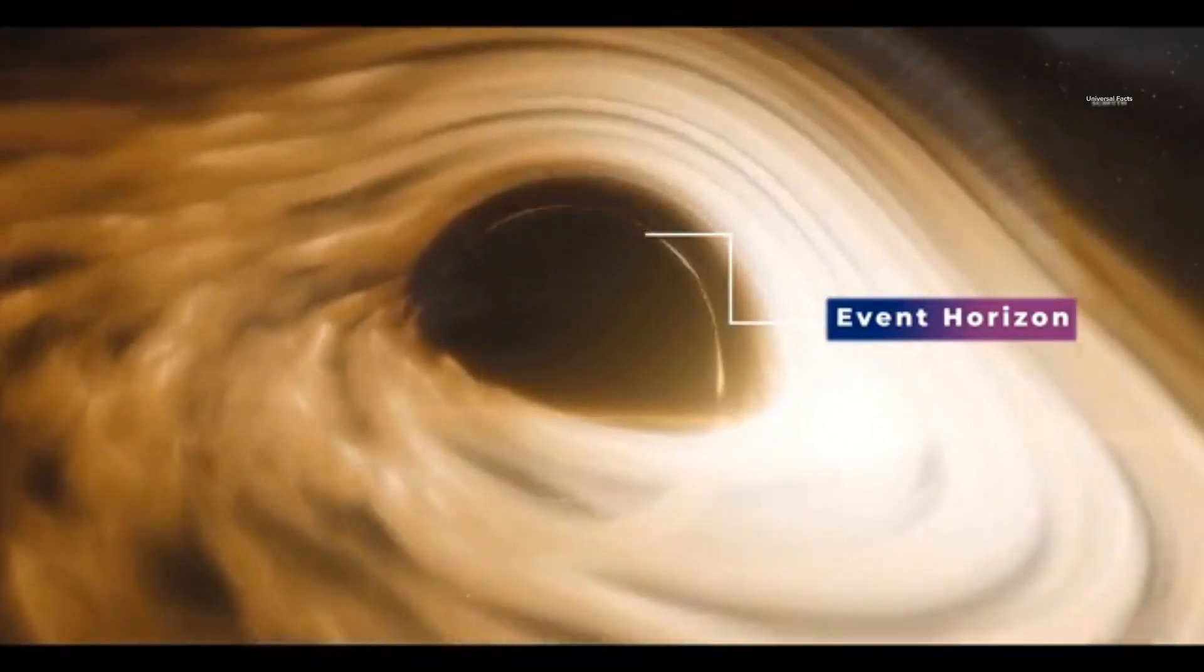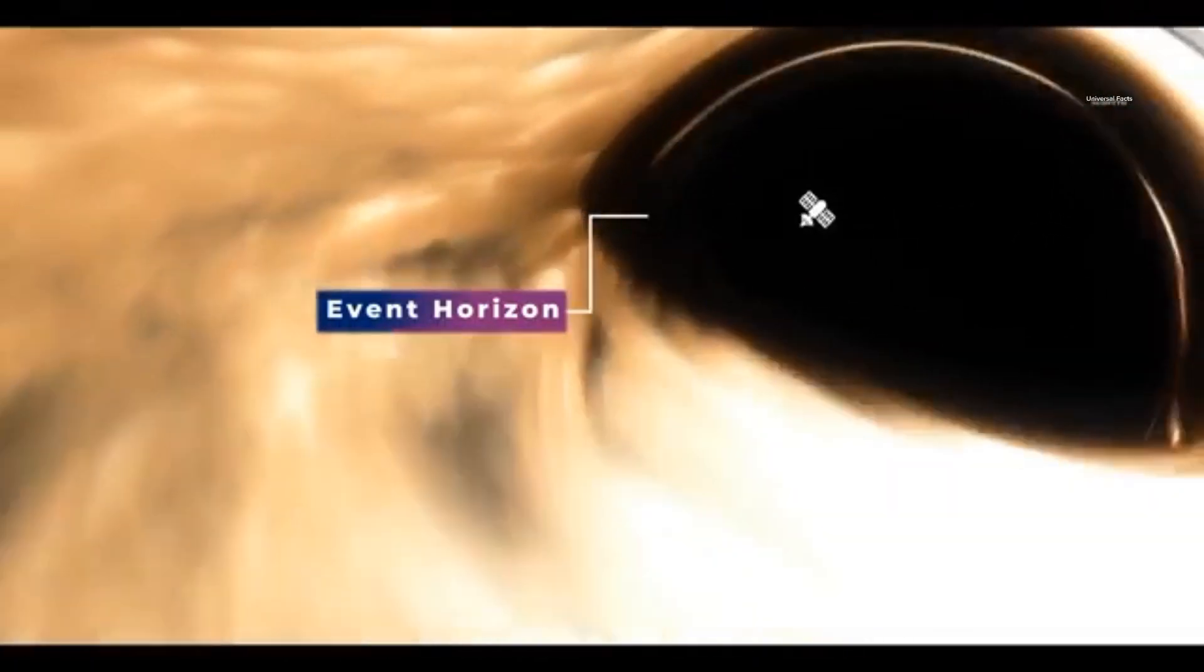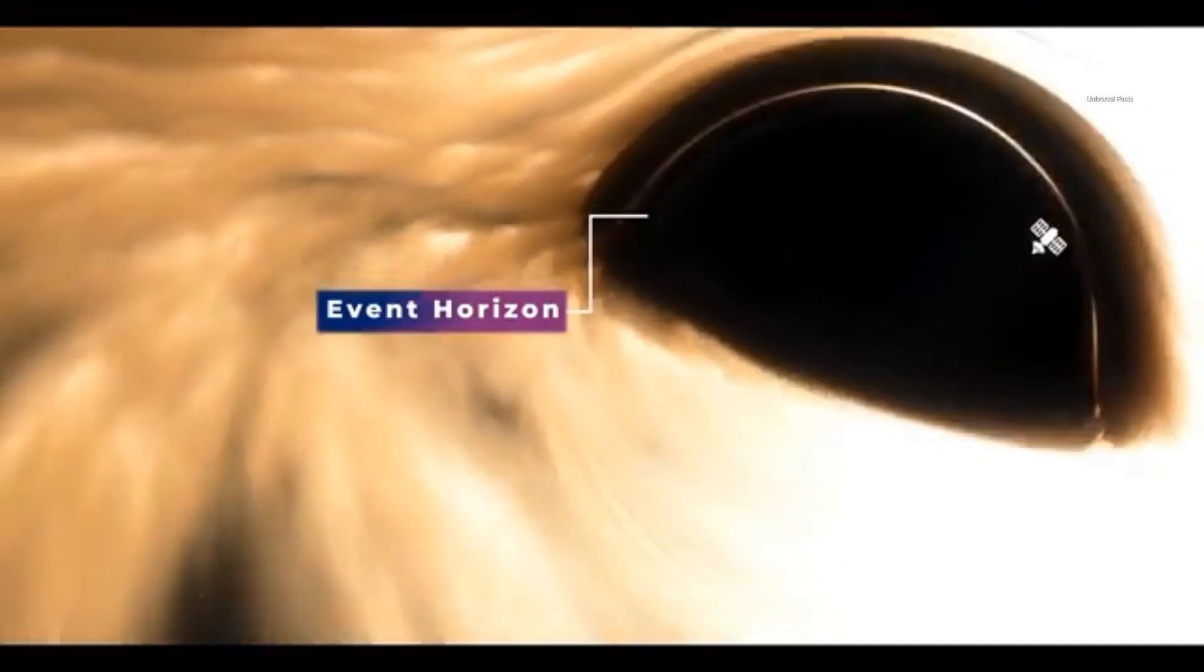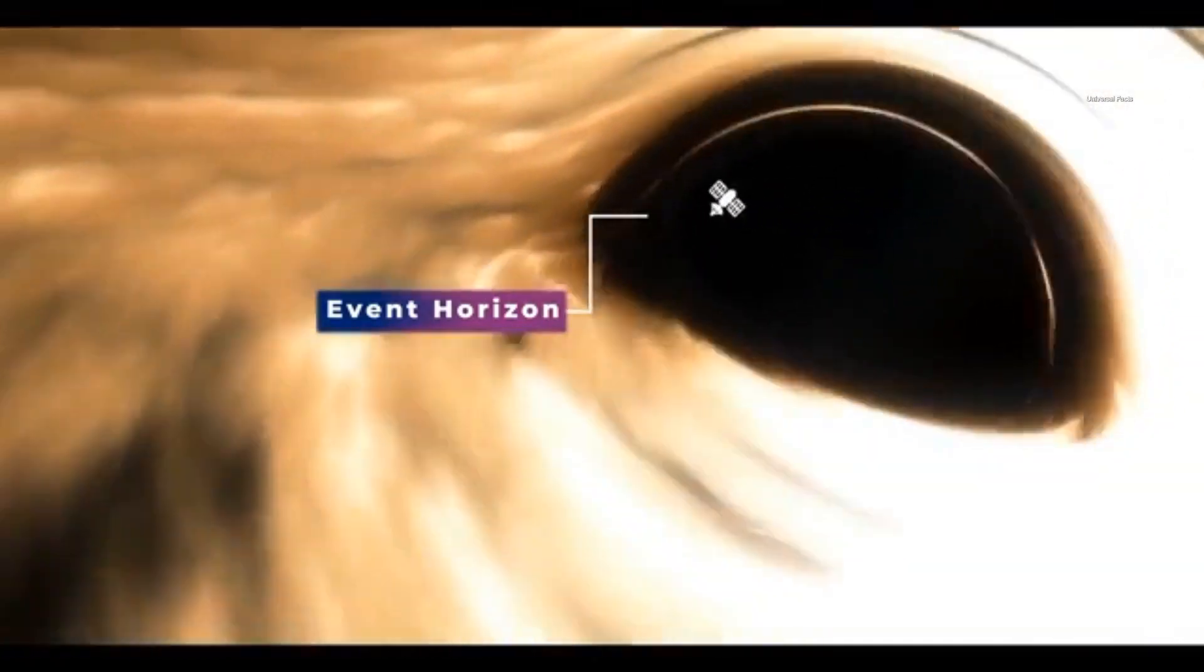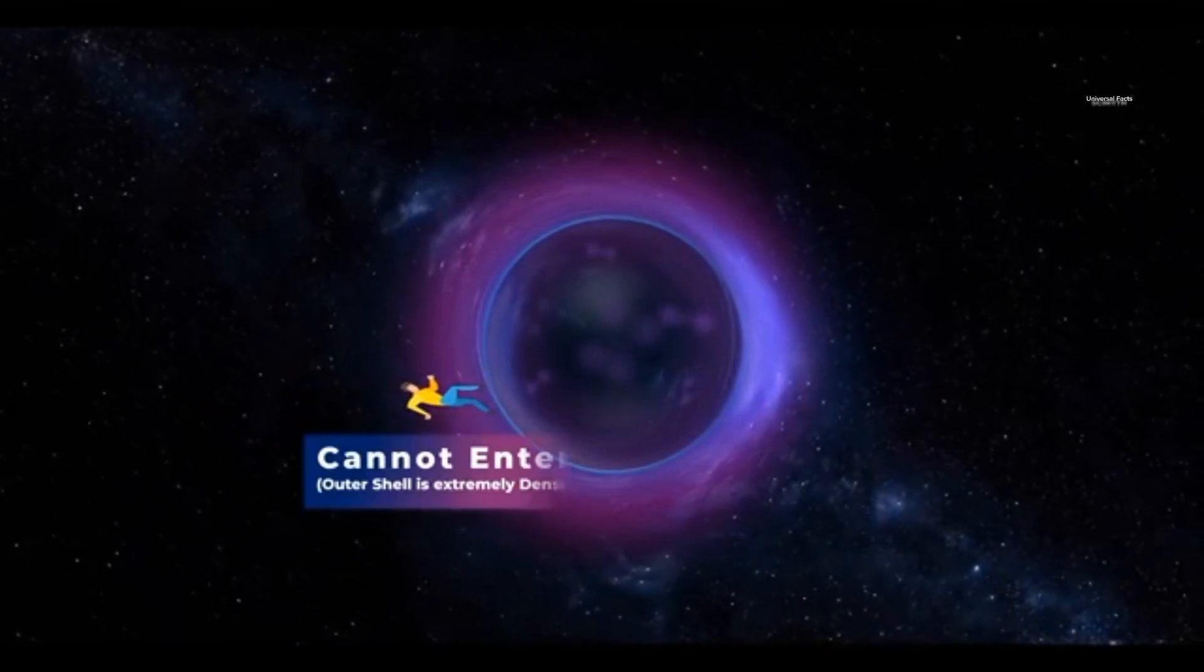In black holes, the event horizon marks the point of no return, a boundary beyond which nothing, not even light, can escape. If you attempt to enter the boundary of a gravistar, either you will fail or the gravistar itself will be destroyed.